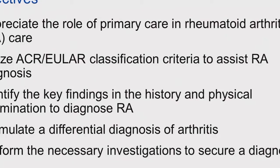The objectives are to appreciate the role of primary care in rheumatoid arthritis care, to utilize the ACR-EULAR classification criteria to assist in diagnosing rheumatoid arthritis, to identify the key findings in history and physical exam to diagnose RA and formulate a differential diagnosis of arthritis, and then to perform the necessary investigations to secure a diagnosis.